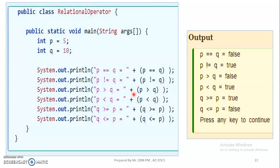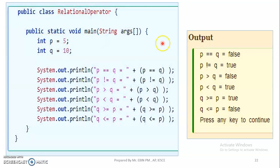These are examples of relational operators. Here is the public class for the relational operator example. We call public static void main with string arguments — the main function. Then we declare int p equal to 5 and q equal to 10.